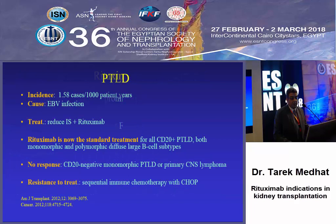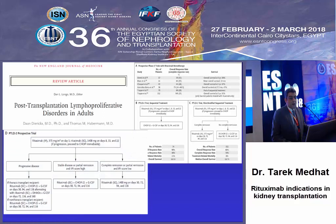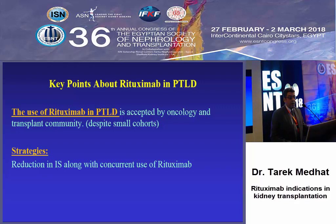Rituximab can be used as a good treatment for post-transplant lymphoproliferative disorder with decreased or reduced immunosuppression. It is best in CD20-positive cases, both monomorphic and polymorphic diffuse large B-cell type. If you have CNS lymphoma or CD20-negative disease, response will be poor. A review article of prospective trials using rituximab shows remission rates up to 50-70%, and if the patient has progressive or partial response, you can give rituximab followed by chemotherapy protocol. This is accepted by oncology and transplant societies, albeit in a small number of patients.